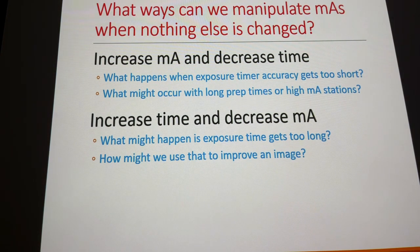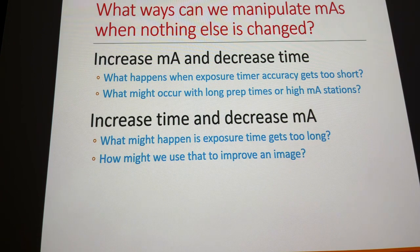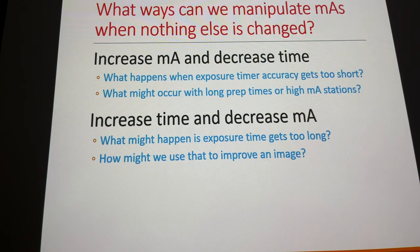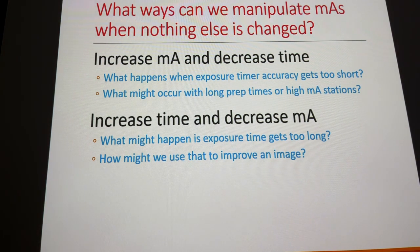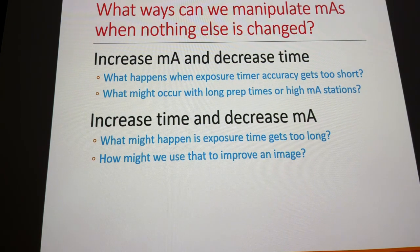One possible consequence of making time too short is quantum mottle. However, with modern digital image receptors being so sensitive, it's extremely difficult to demonstrate quantum mottle even in a lab setting. People have tried with MAS so low it's almost unregisterable and still couldn't produce quantum mottle on digital receptors. It's still registry-testable, but you'd have to do something really wrong to introduce it.